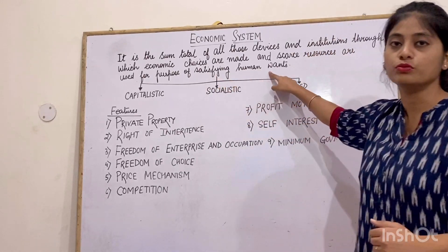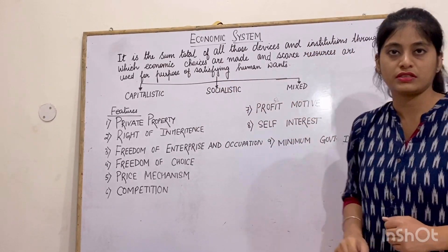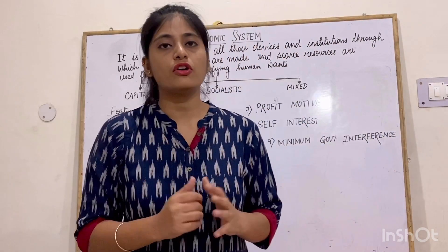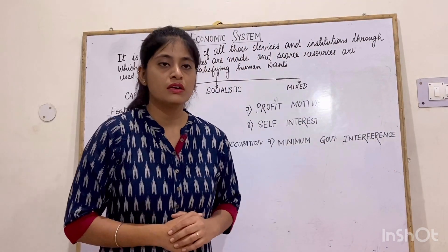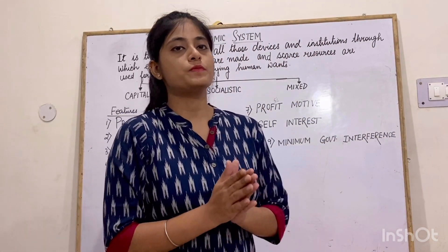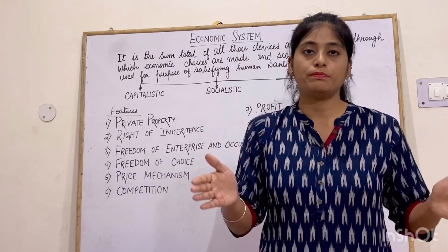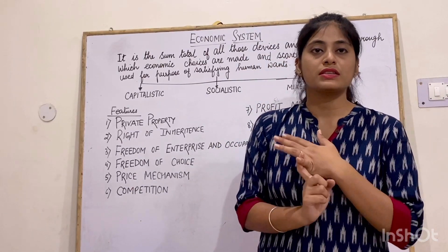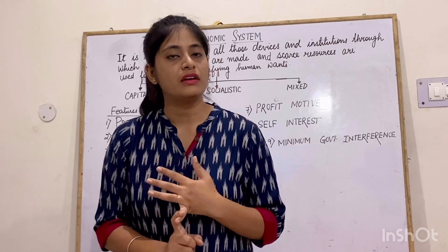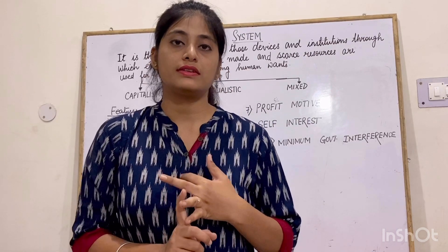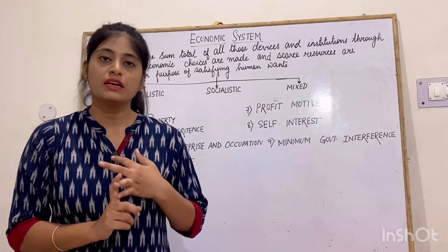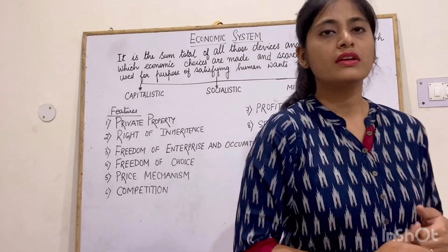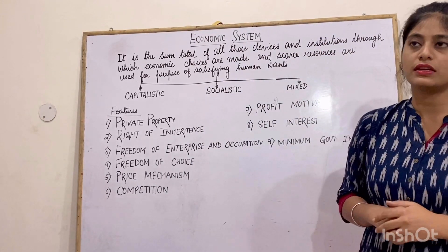Why do we produce goods and services? For satisfying human wants. Now, on the basis of economic system, our economy has been divided into three parts: one is capitalistic economy, another one is socialistic economy, and the third one is mixed economy.